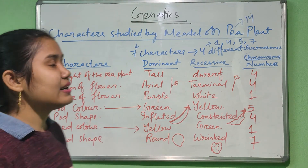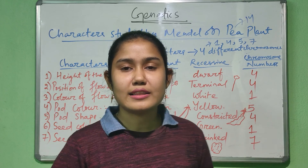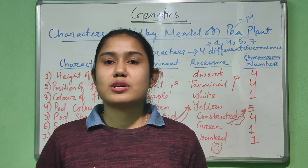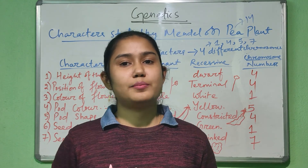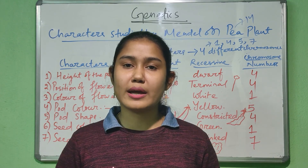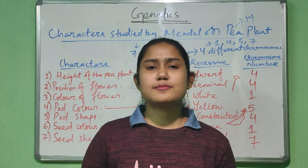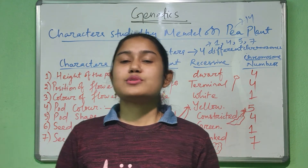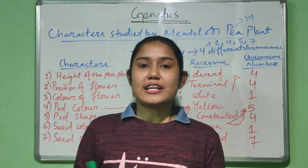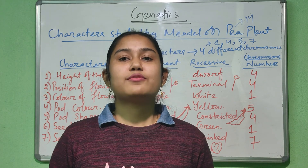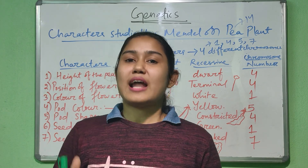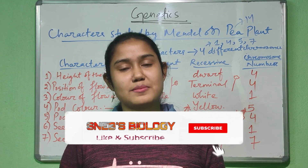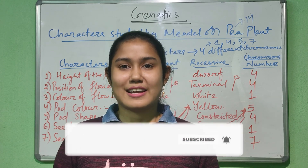These are the characters that Mendel studied in the pea plants. Using these characters, he proposed four postulates, among which two are principles and two are laws. We will study about these principles and laws soon. Before that, we will study some important terms related to genetics. Stay tuned, do subscribe to our channel, like our videos, share with your friends, and press the bell icon to get all notifications from us.